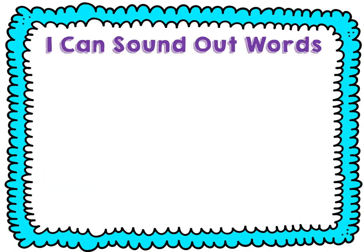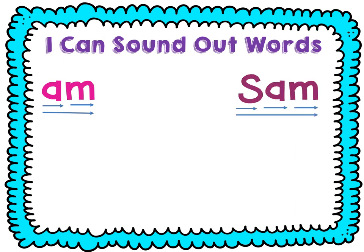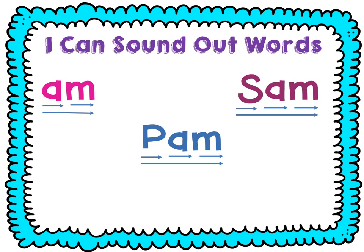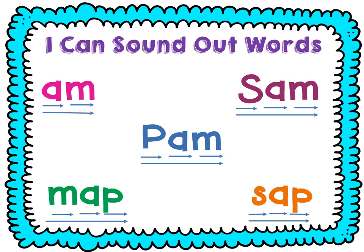Let's practice sounding out some words — we'll say each sound and then blend it together. Ready? A — M — am. S — A — M — Sam. P — A — M — Sam. M — A — P — sap. Last one: S — A — P — sap.